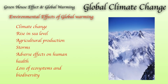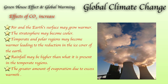The effects of these things include: first, climate change — all seasons are now different and they are affected by these gases and emissions. Secondly, rise in sea level — as the temperature of the earth increases, there is melting of the ice caps, which increases sea level. Agriculture production decreases. There will be more chances of storms, adverse effects on human health, and loss of ecosystem and biodiversity.